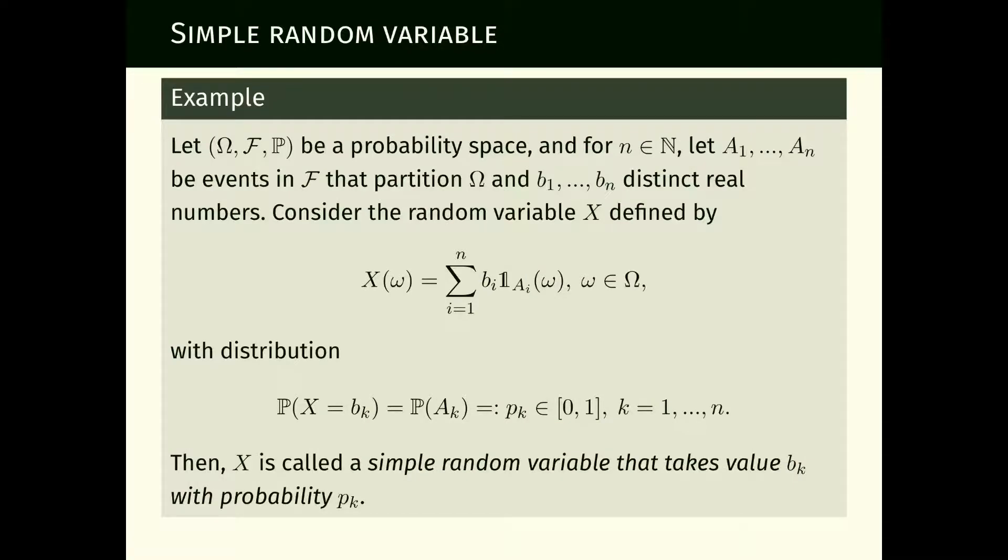A simple random variable is a random variable that takes only finitely many values. We can list the values it can take and the events on which it takes those values. Since you take either one or the other, these events are disjoint and their union equals omega, so they form a partition of omega. A partition is a collection of mutually disjoint sets whose union is the whole sample space.